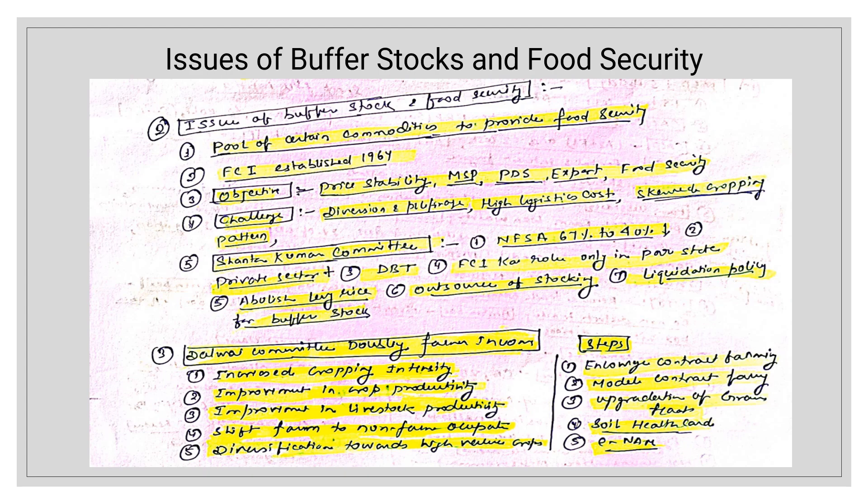The Dalwai Committee on Doubling Farmer Income gave recommendations: increase cropping intensity, improve crop productivity, improve livestock productivity, shift from farm to non-farm occupations, and diversification towards high-value crops. These steps can also add to farmer income.